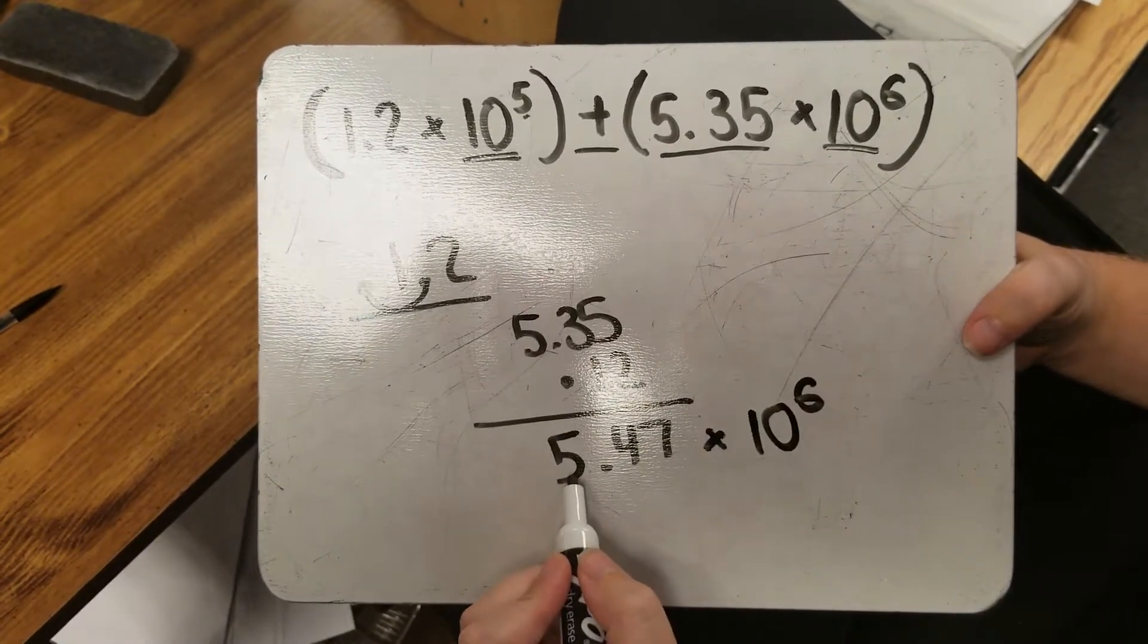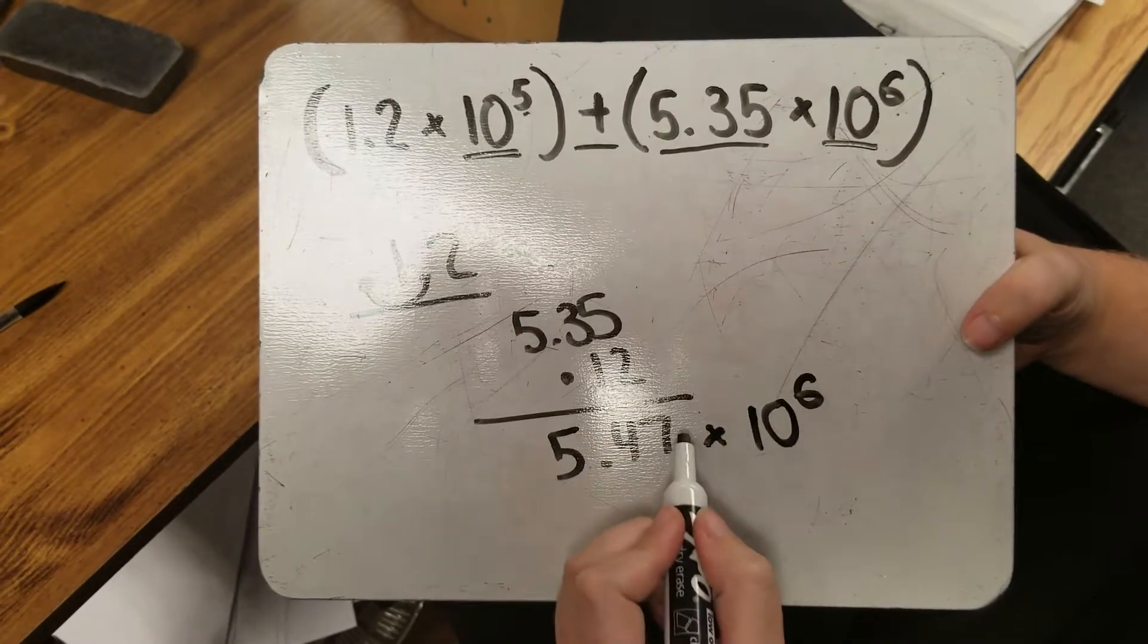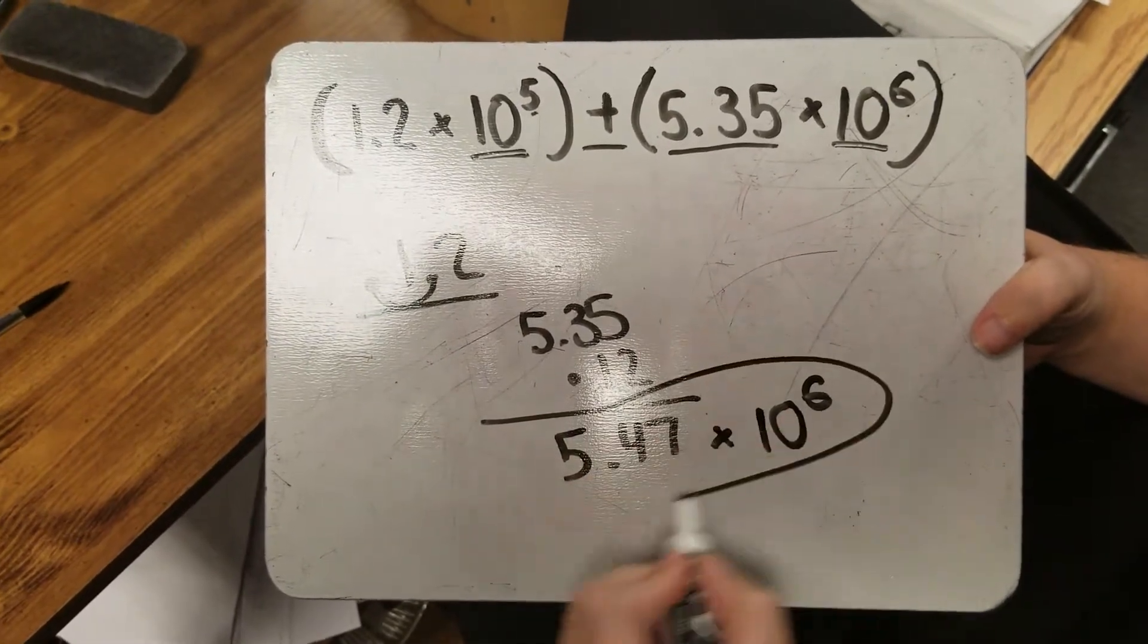I have one number left of the decimal, and I have no zeros. This is in scientific notation, and I'm done.